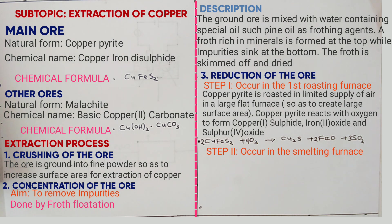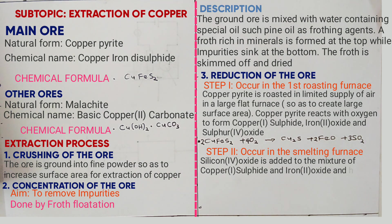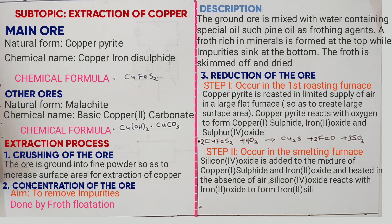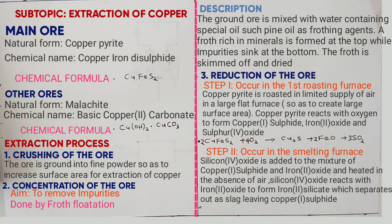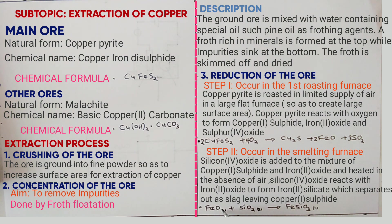In step number two, which occurs in the smelting furnace, silicon four oxide (SiO2) is added to the mixture of copper one sulfide and iron two oxide, and heated in the absence of air. The silicon four oxide reacts with iron two oxide to form iron two silicate, which separates out as a slag, leaving copper one sulfide. The equation is: FeO + SiO2 → FeSiO3 (liquid slag).